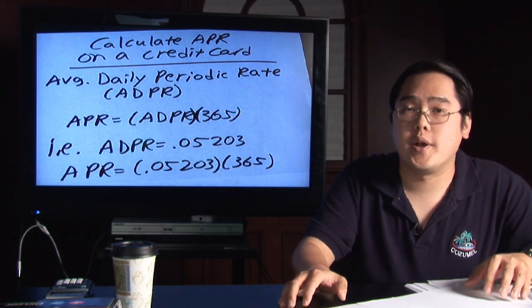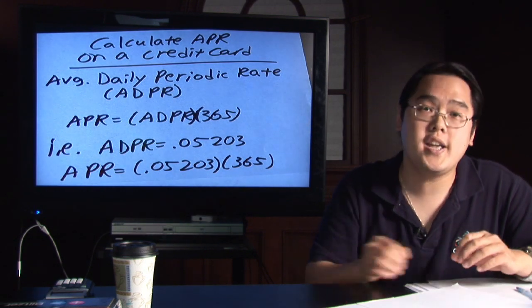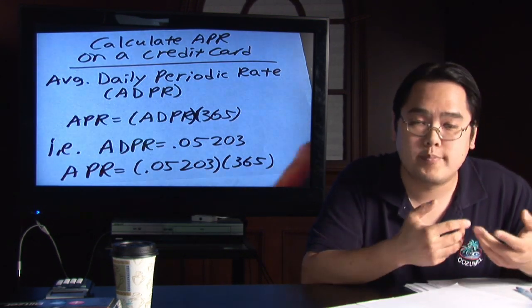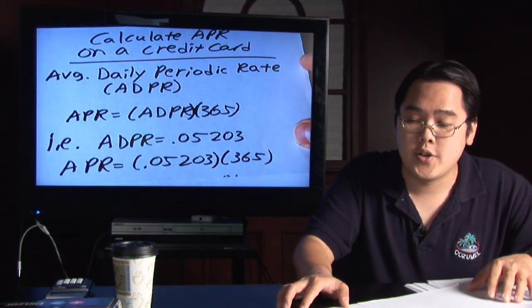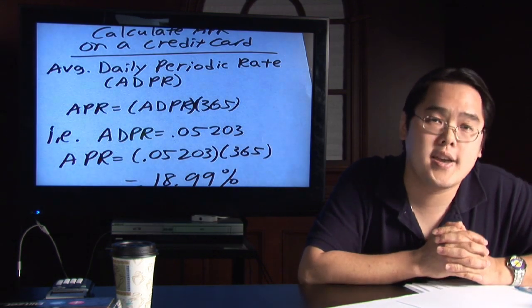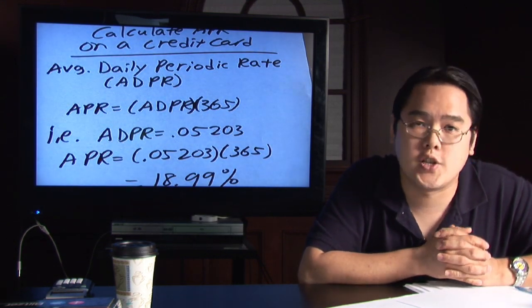You take the .05203 and you multiply by 365. Once you do that using a calculator you're going to come to the grand total of 18.99% round to two decimal places.